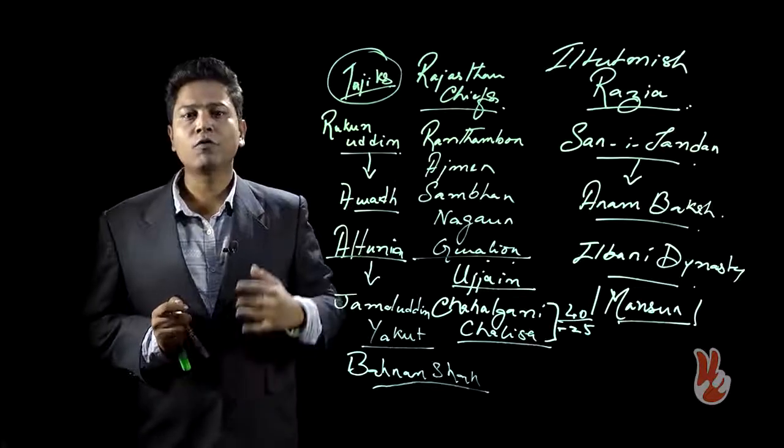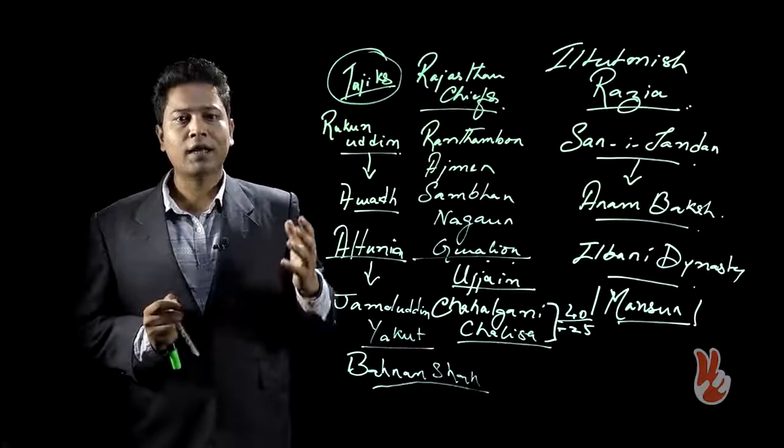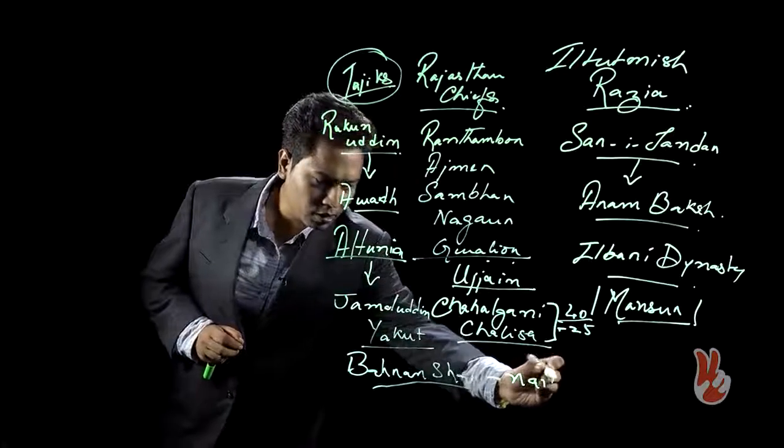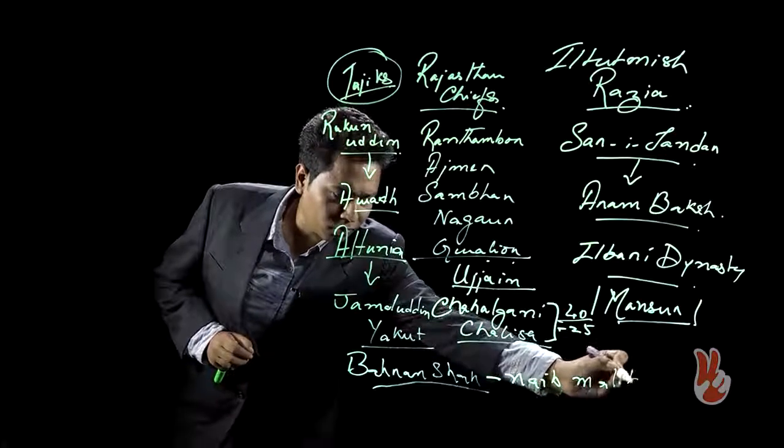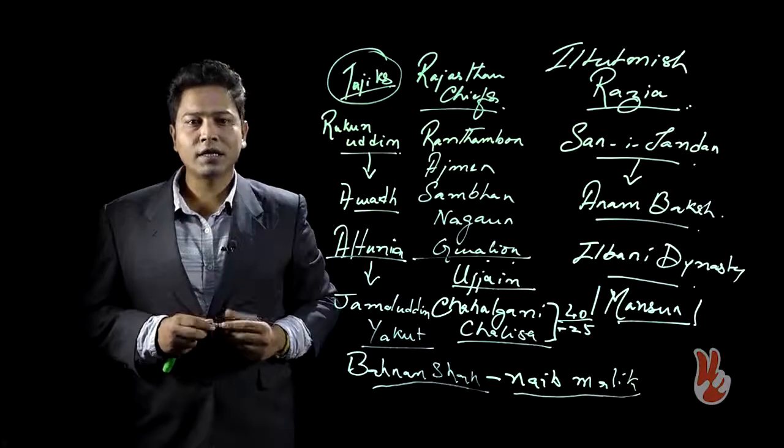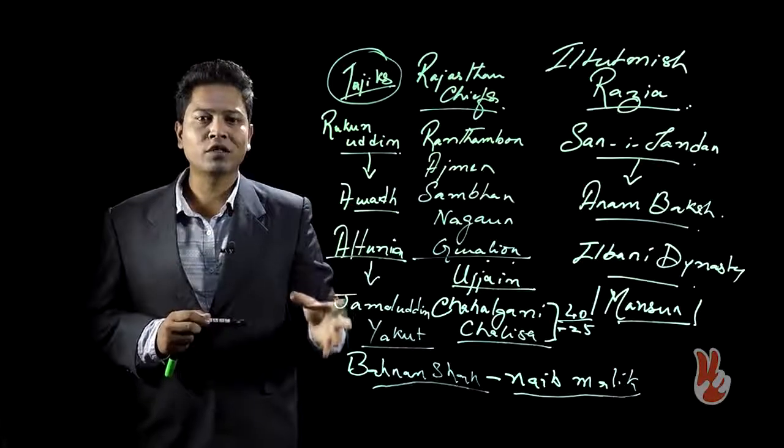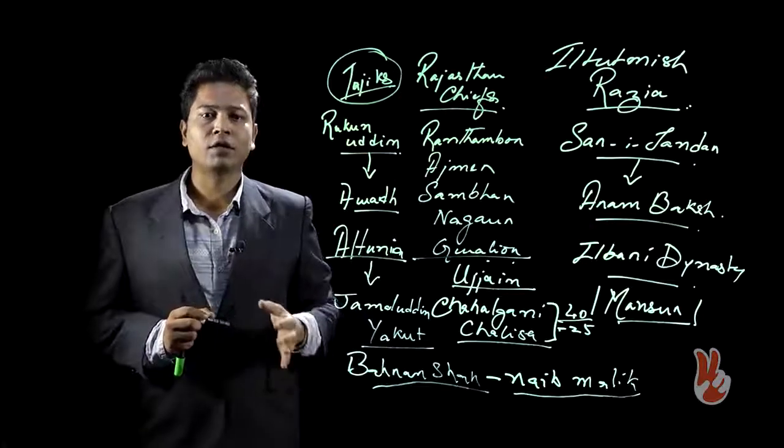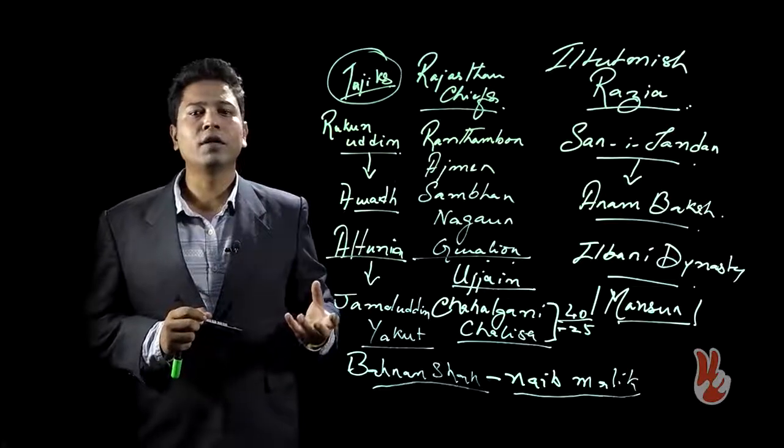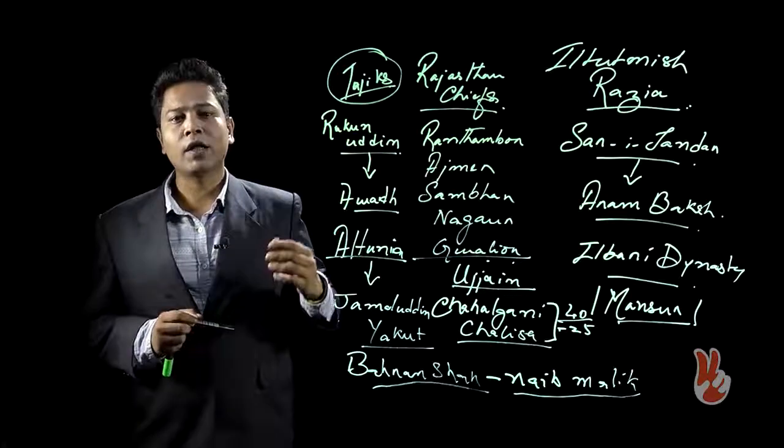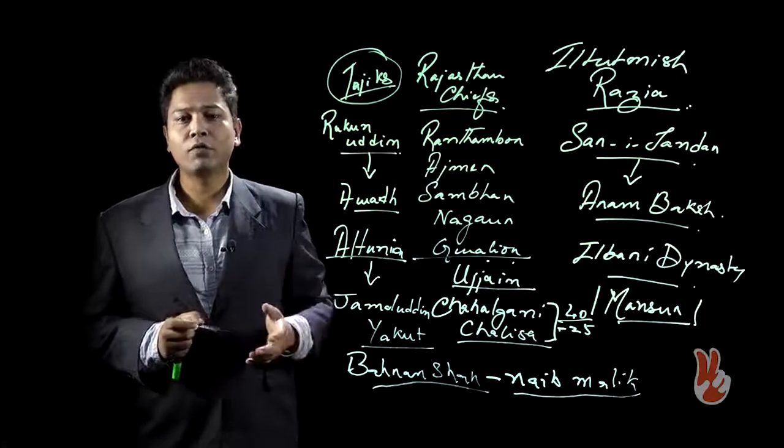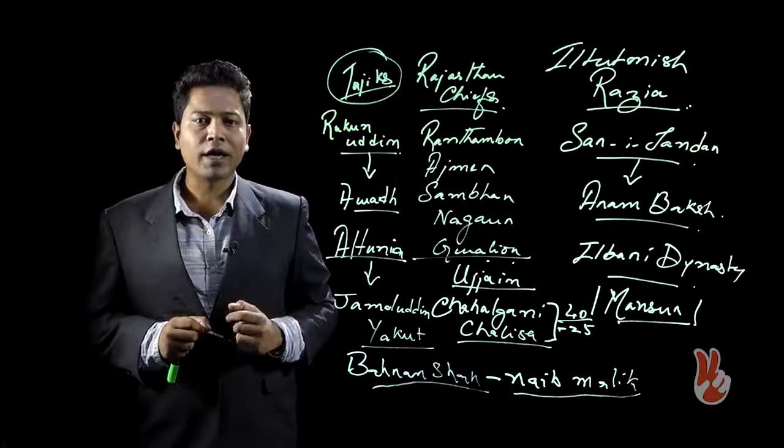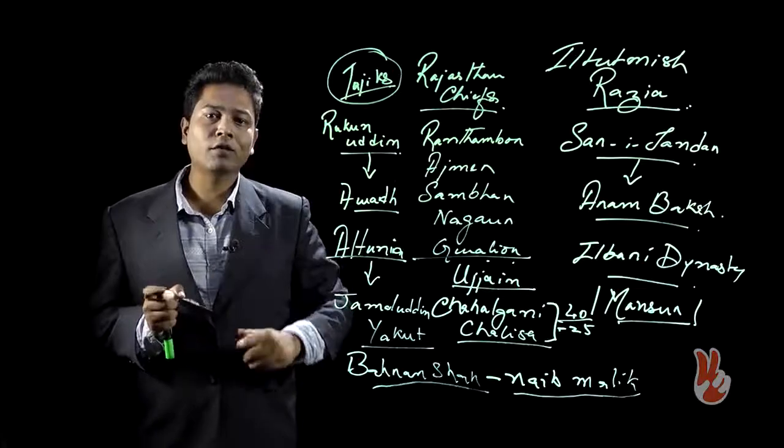During Behram Shah's reign, as we all know, the Turkish nobles become so very powerful that they are able to force him into creating a new position. And that is Nayib Malik. From now onwards, during the Ilbari dynasty itself, the Nayib Malik holds the actual string of administration and actual string of rulership. And the Sultan himself remains only a puppet ruler. This will be remedied only during the time of Balban and later on during the time of Alauddin Khalji. And also during the time of Muhammad bin Tughlaq, there would be various attempts by important Sultanate rulers to curb the power of the nobility. And the struggle between the nobility and the Sultan, it continues.